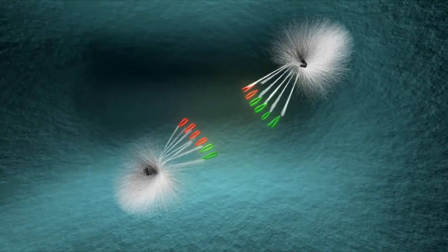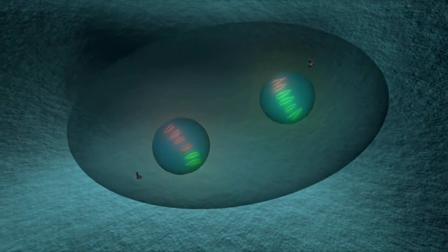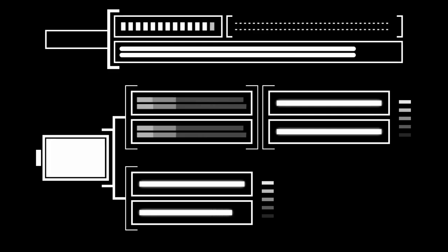This notion ties into an even stranger idea: that our universe might be a mirror image of another, with time flowing backward and reality reflected in ways we can barely imagine.